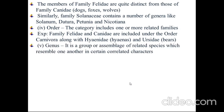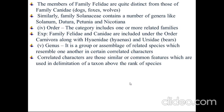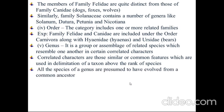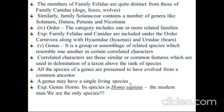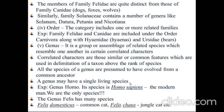Genus — it is a group or assemblage of related species which resemble one another in certain correlated characters. Correlated characters are those similar or common features which are used in delimitation of a taxon above the rank of species. All the species of a genus are presumed to have evolved from a common ancestor. A genus may have a single living species. For example, genus Homo — its species is Homo sapiens, the modern man, and we are the only species. But the genus Felis has many species: Felis domesticus the common cat, or Felis chaus the jungle cat.